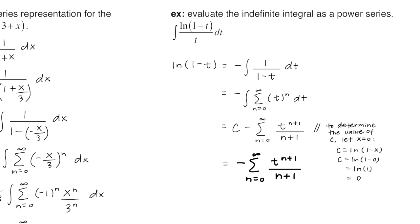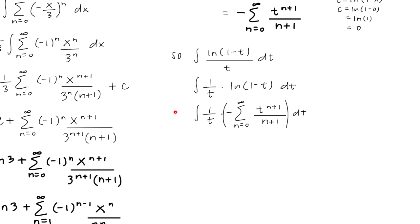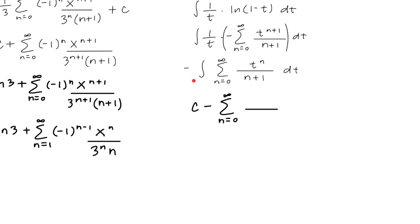Going back to the original problem, we have the series for ln of 1 minus t, but we still need to divide by t and then integrate. Bringing this t to the front, we substitute the series in for ln of 1 minus t, bring the negative to the front, and bring the t inside the sigma. This t to the 1 would cancel with the t to the 1 factor inside, leaving just t to the n. Now we integrate: it's an indefinite integral so we have an arbitrary constant, then drop down the negative and the sigma. Integrating t to the n adds 1 to give t to the n plus 1, and since there's already an n plus 1 in the denominator it becomes n plus 1 quantity squared. The series can also be rewritten starting at n equals 1.